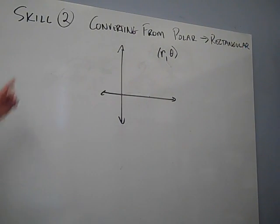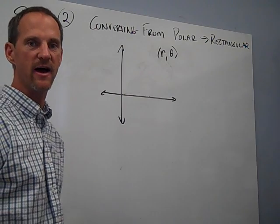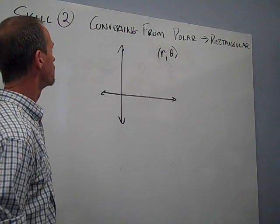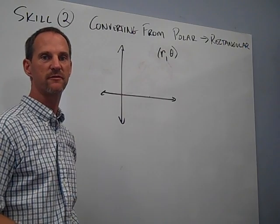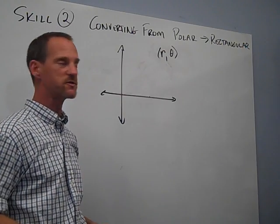Okay, everybody. I'm back with skill 2. This is the second of our five skills for this chapter. And we are going to be converting from polar coordinates into rectangular form. Okay, and this one is fairly straightforward.